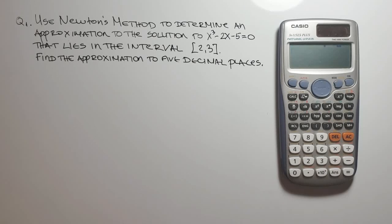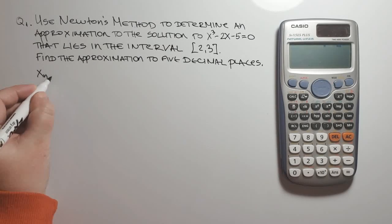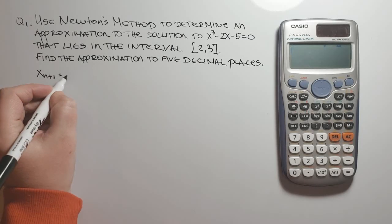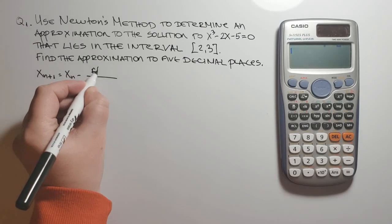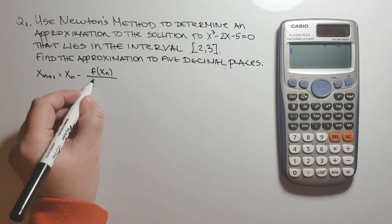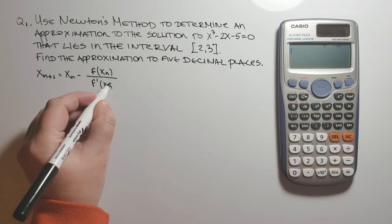The iteration rule for the Newton's approximation is the following: x sub n plus 1 equals x sub n minus f of x sub n divided by f prime of x sub n.